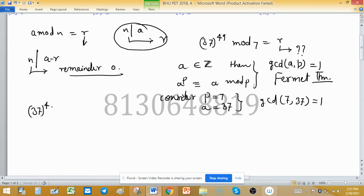So 37 raised to the power 7 is congruent to 37 mod 7. Divide this one - what is the remainder? 7 times 5 is 35, so 2 mod 7.